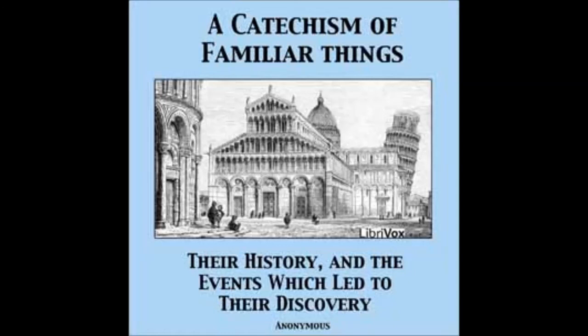Was sculpture always performed in stone? No. At first, statues and other figures were formed of wood or baked clay, afterwards of stone, marble, and metals, though these last were not brought to any degree of perfection until about 300 years before Christ. The Greeks were famous for their works in ivory. The great master of the art of carving statues in it was Phidias.